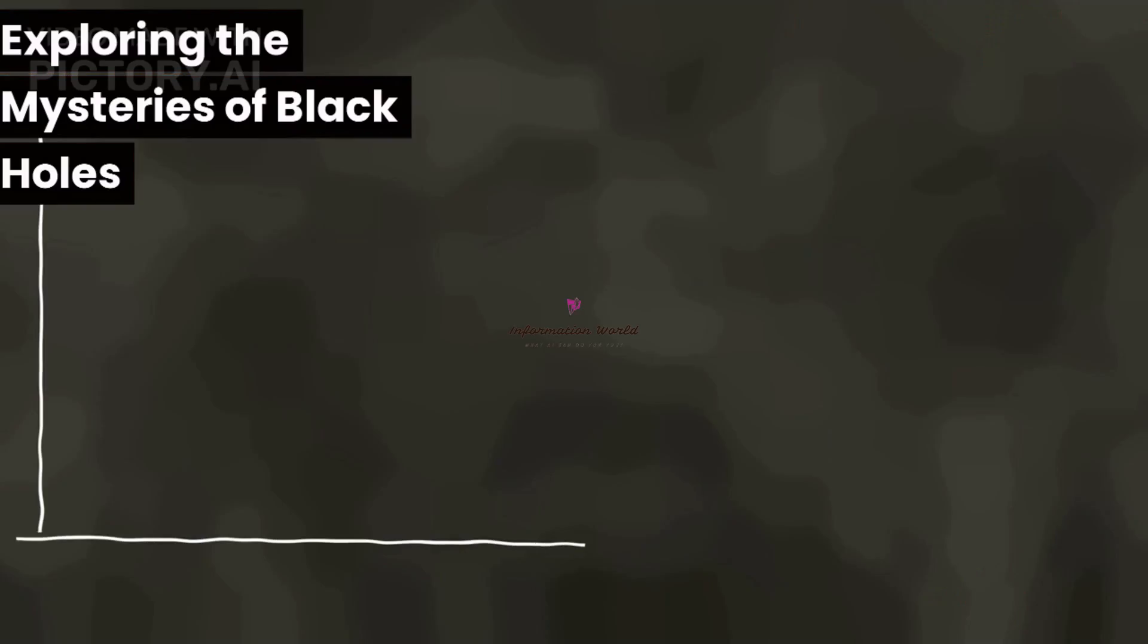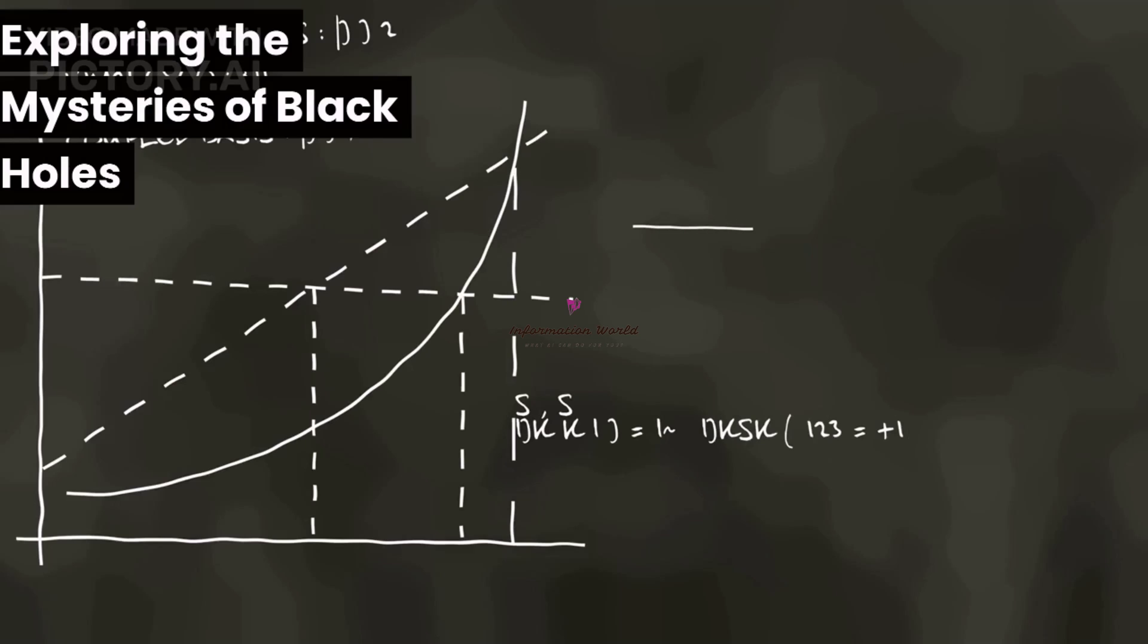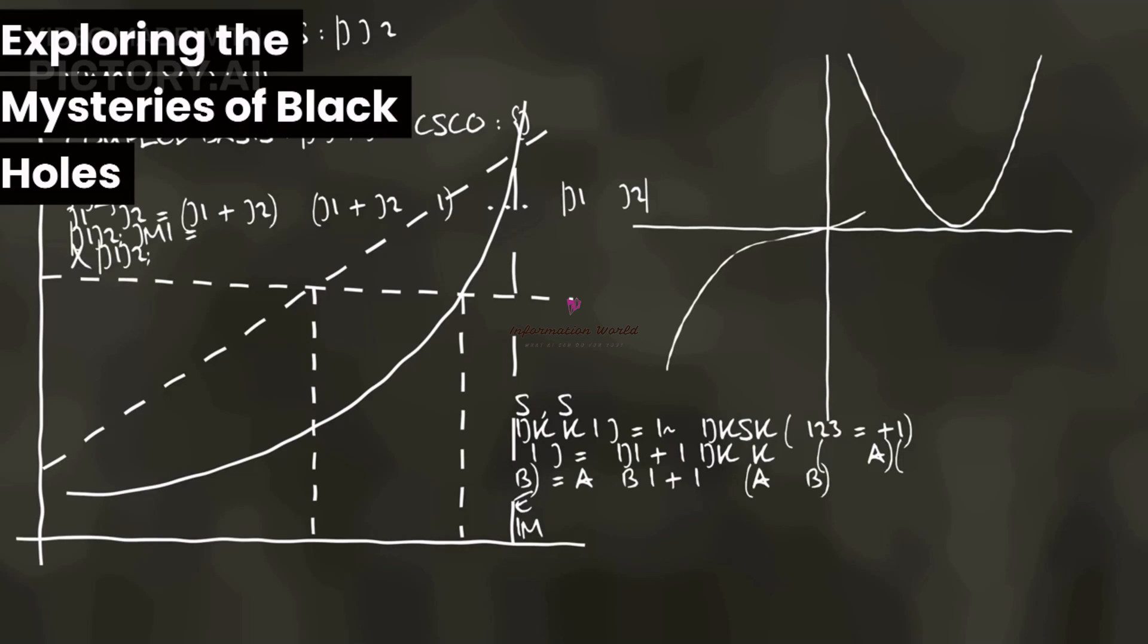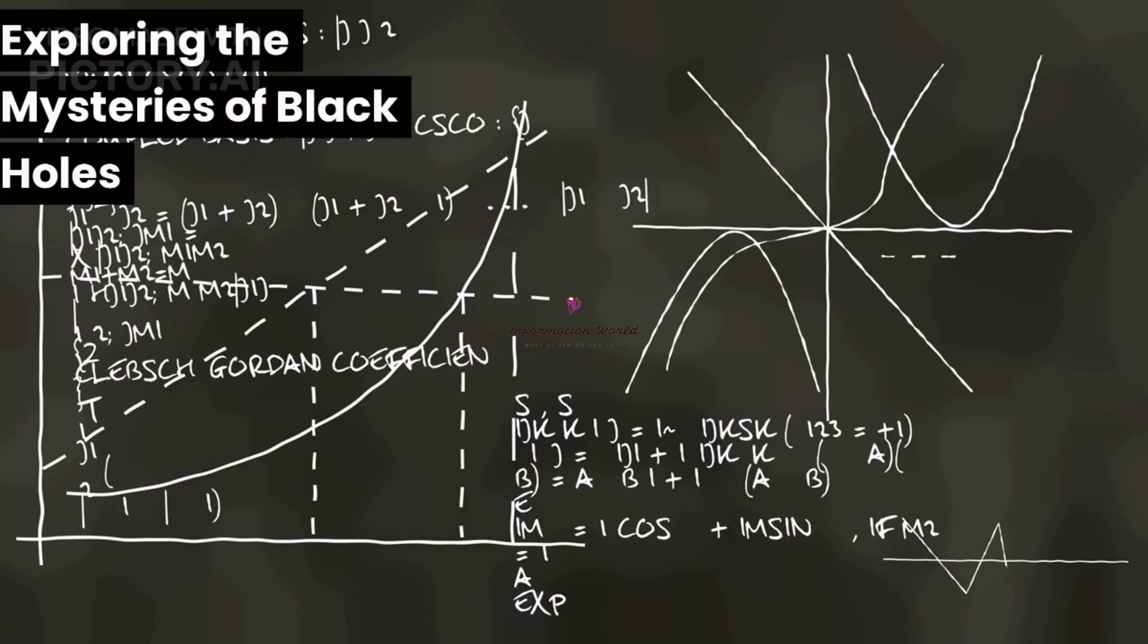For example, scientists are still trying to understand what happens to matter that falls into a black hole. Does it simply disappear, or is it somehow preserved inside the black hole? Another mystery is the concept of information loss, which goes against the laws of quantum mechanics.